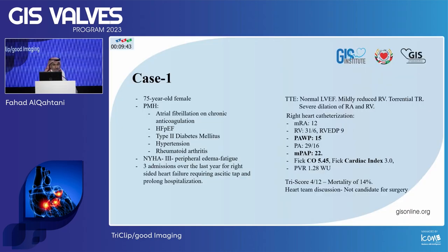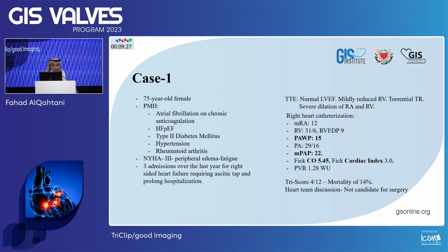This is a 75-year-old female with a history of atrial fibrillation and chronic anticoagulation, heart failure with preserved ejection fraction, type 2 diabetes, hypertension, and rheumatoid arthritis. She presented with New York Heart Association class 3, peripheral edema, and fatigue. The patient had three admissions over the last year for right-sided heart failure requiring paracentesis and prolonged hospitalization.